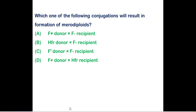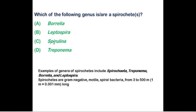The next question is regarding merodiploids, also called partial diploids. Which conjugation will result in formation of merodiploids? Option C is correct — merodiploids are generally formed when the donor is F-prime (F') and the recipient is F-minus (F-), meaning the recipient does not have the F factor.